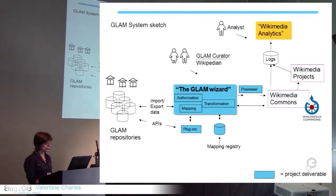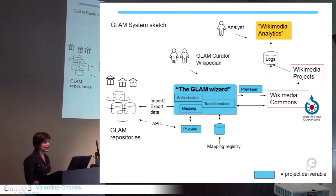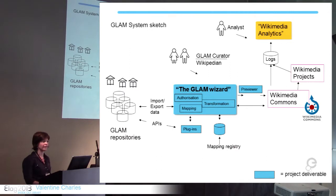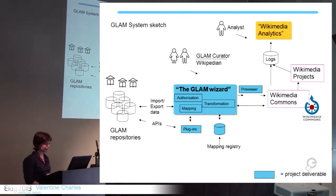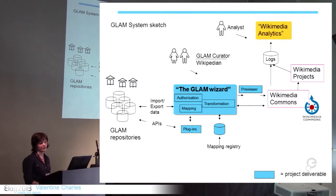The concept is: on one side you have the GLAM repository — libraries being one example — which can export data into what we called the GLAM Wizard, now called the GlamWiki Toolset, where they can import their content, map it, transform their data, preview it, and directly upload it into Wikimedia Commons. Once the content is in Wikimedia Commons, it can be reused across Wikimedia projects — metadata in Wikidata, images in Wikipedia articles, content in Wikisource. Through logs, Wikimedia analytics can then provide usage statistics back to institutions.